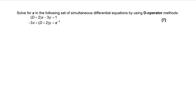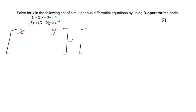The first thing you do is change this to a determinant format. You're going to take the x values and the y values and place them accordingly — the x values there and the y values there — then close the bracket. Because they are looking for x, you open the bracket on the right-hand side.